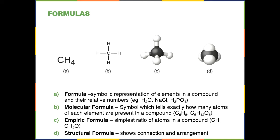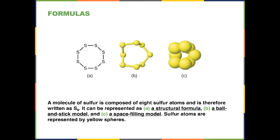The structural formula shows the connections and arrangements of atoms. There are different kinds of structural formulas: the first is a stick or bar structural formula, the second is a ball-and-stick formula, and the third is a space-filling formula. Sulfur is composed of eight sulfur atoms and can be written as S8. It can be represented as a structural formula, a ball-and-stick model, or a space-filling model, with sulfur atoms represented by yellow spheres.